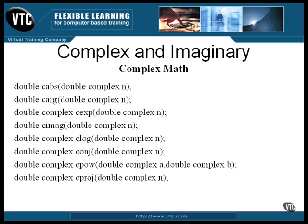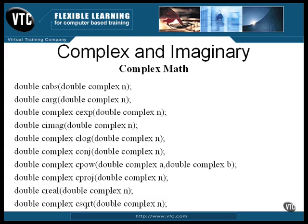The complex conjugate function returns the complex conjugate of n. The cpow function returns the complex value raised to the power of b. cproj returns the projection of n onto the Riemann sphere. creal returns the real portion of n, and csqrt returns the complex square root of the complex value of n.